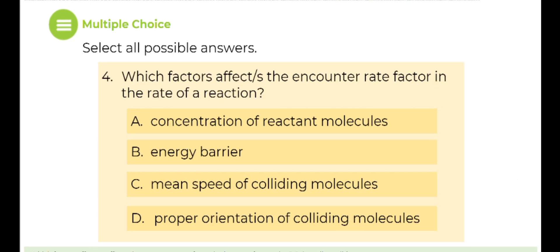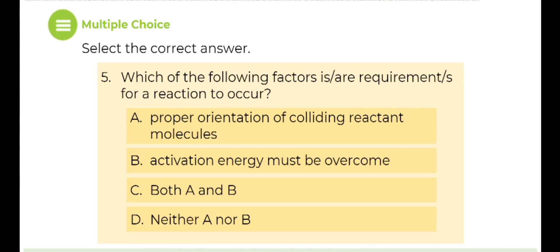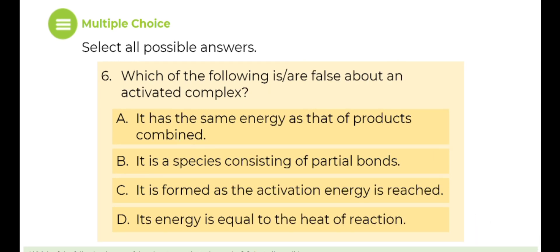Number four. Which factors affect the encounter rate factor in the rate of a reaction? Number five. Which of the following factors is or are requirement or requirements for a reaction to occur? Number six. Which of the following is or are false about an activated complex?